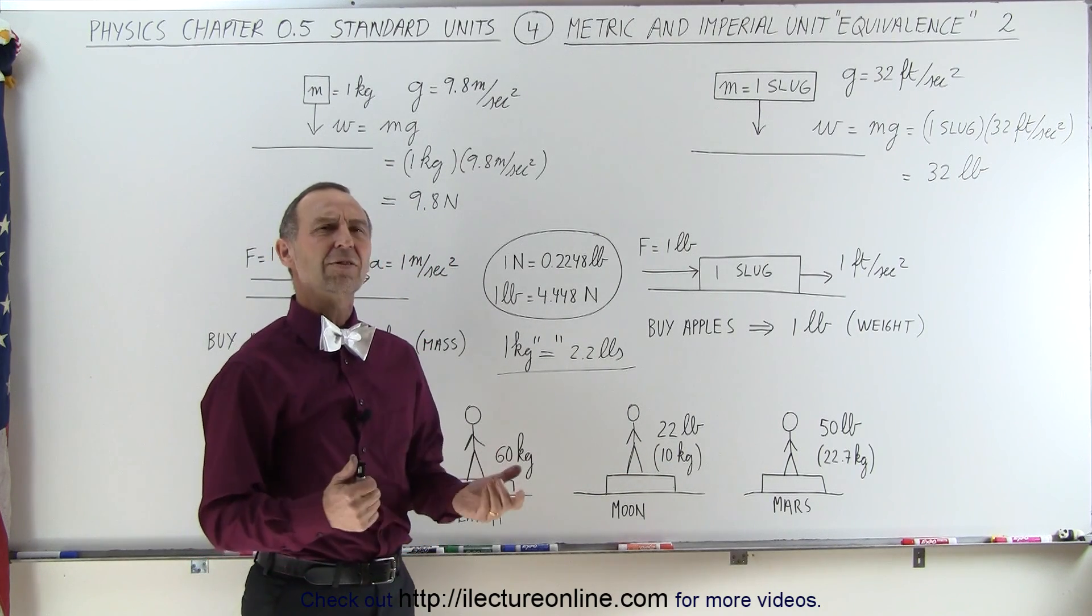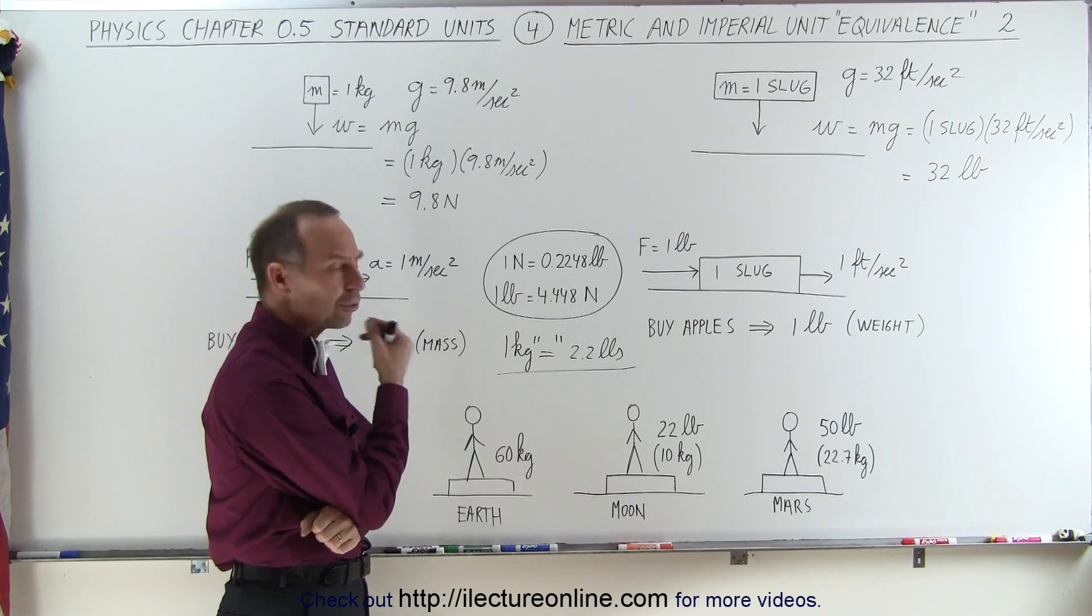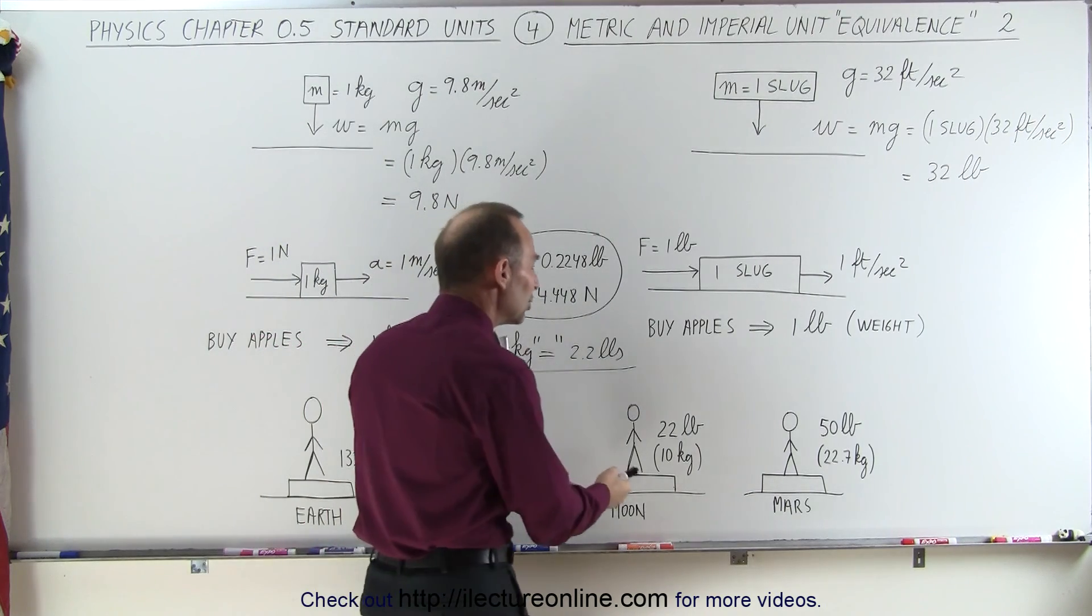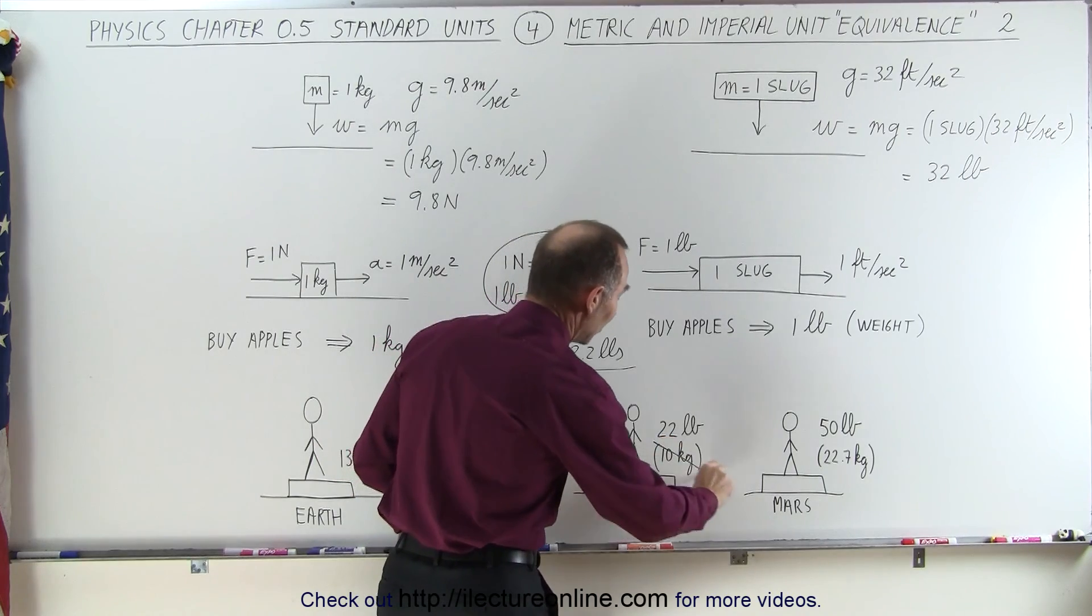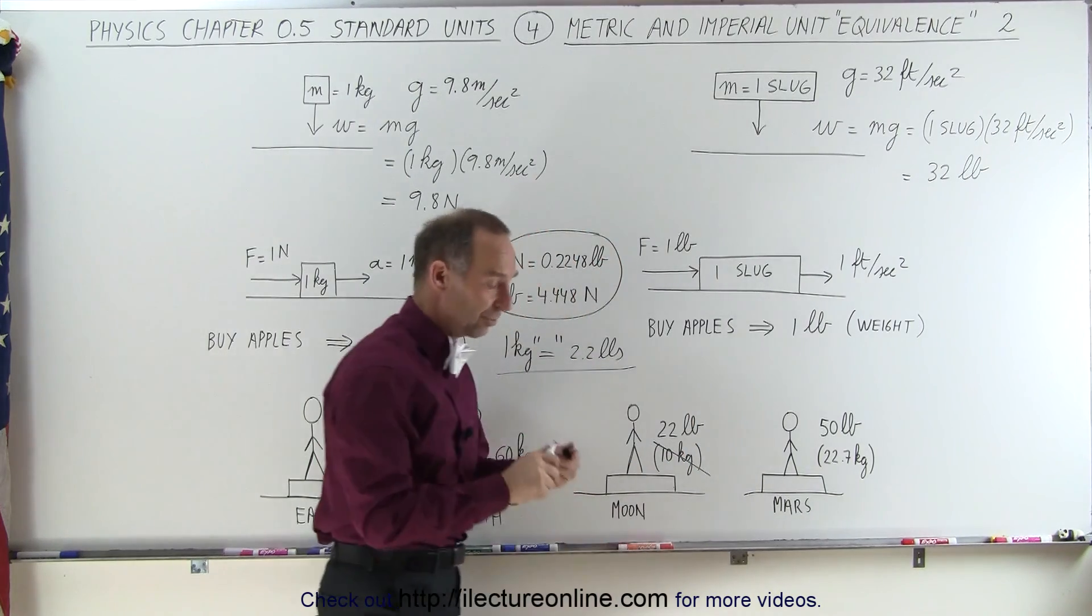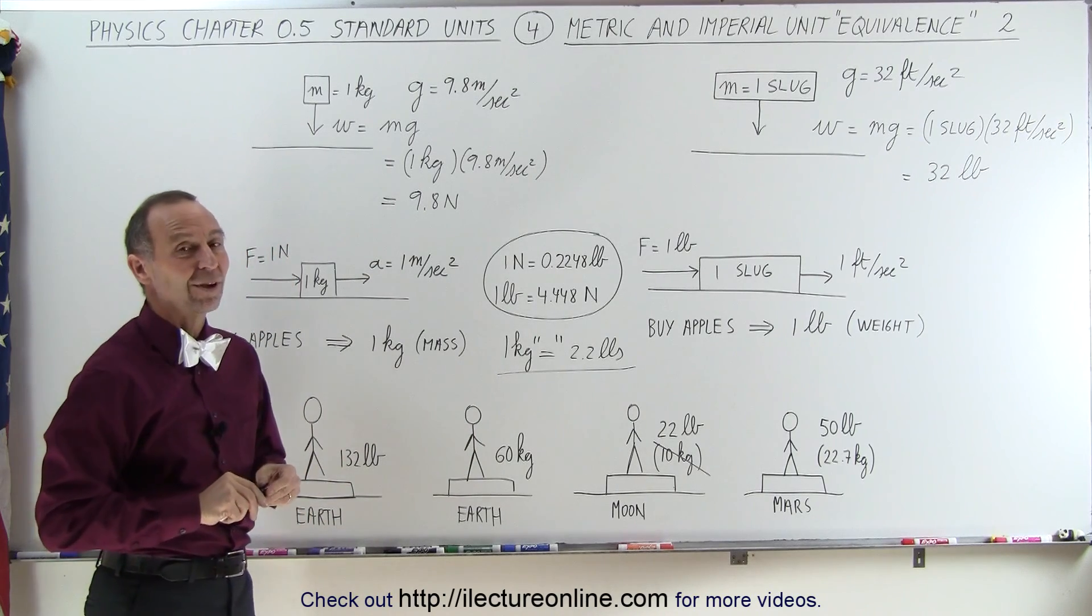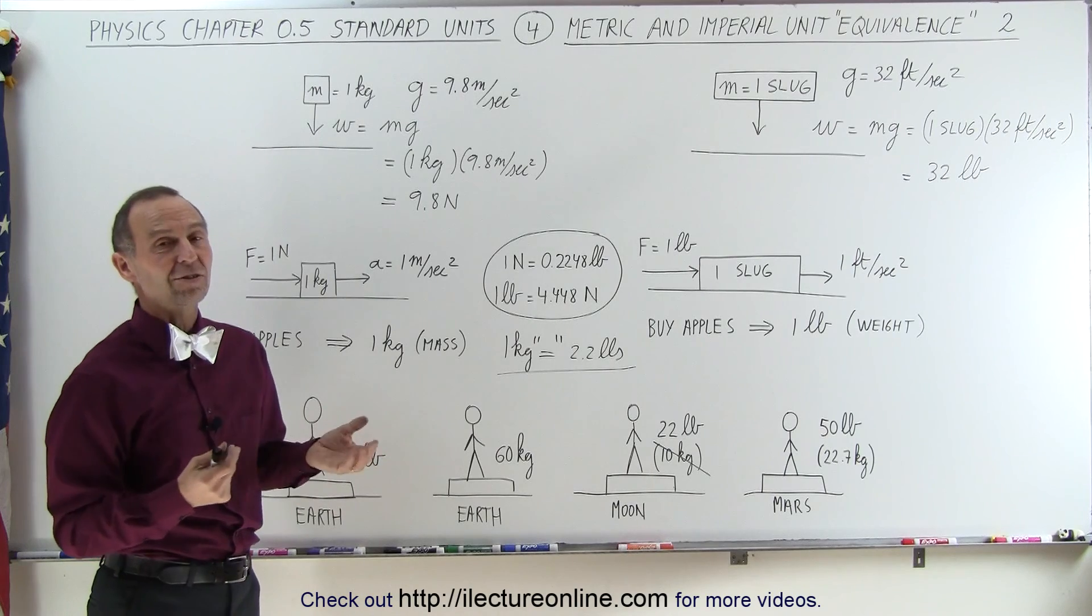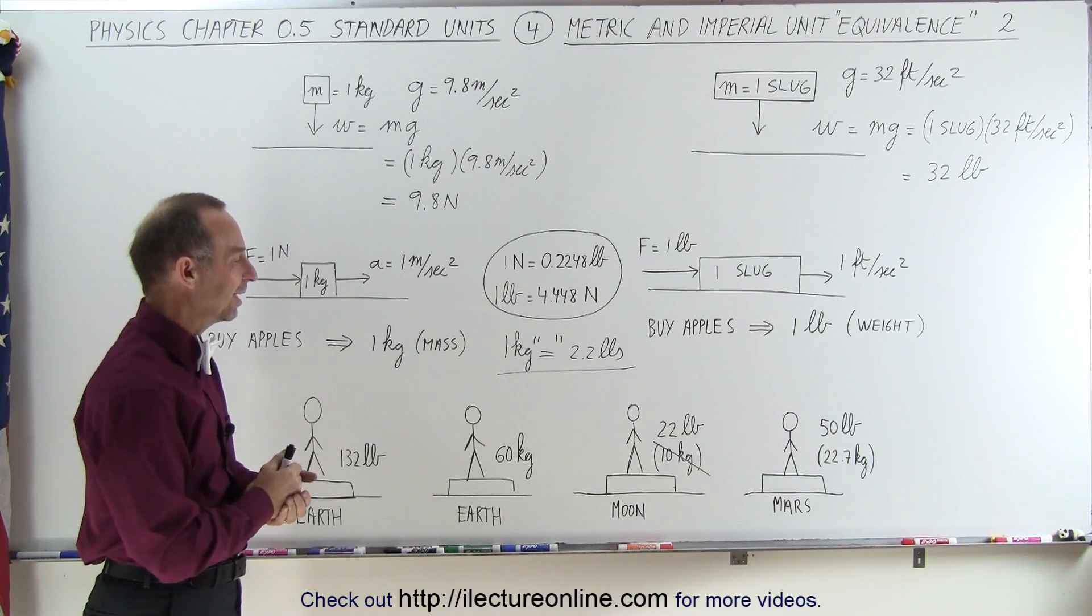Wait a minute, that doesn't sound right, does it? Your mass didn't change. How does that work then? Well, your scale will have to be adjusted for that. You will appear on the moon as if you have a mass of 10 kilograms. Of course, that's not the case. You'll have a weight of 22 pounds. You will still have a mass of 60 kilograms. So if you're going to visit another planet, or you're going to visit the moon, I suggest bring a scale that measures in pounds, not a scale that measures in kilograms, because you'll get the wrong measure.